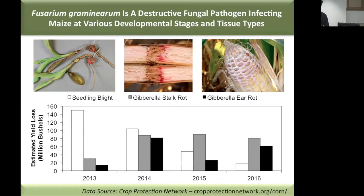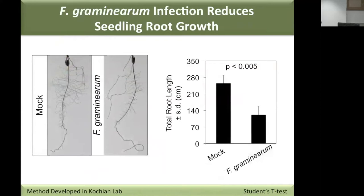Fusarium graminearum is a destructive and widespread fungal pathogen that infects maize. Depending on the tissue type and developmental stage of the interaction, you can get seedling blight, stalk rot, or ear rot in maize. Every year these three diseases, caused by the same pathogen, collectively cause hundreds of millions of dollars in yield loss in corn. So this is a pretty economically relevant pathogen to work with.